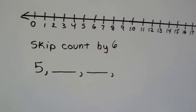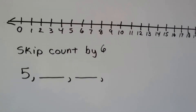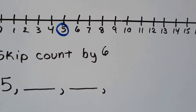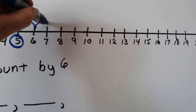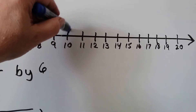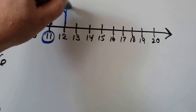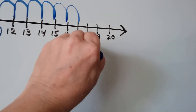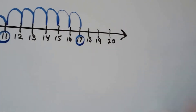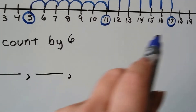Let's try this again. Let's skip count by six, but we're going to start with the five. So we're starting here at the five and we're going to skip count by six. One, two, three, four, five, six — now we've got an eleven. One, two, three, four, five, six — we're at a seventeen. And if the number line kept going, we could keep going. So we have: five, eleven, and seventeen.